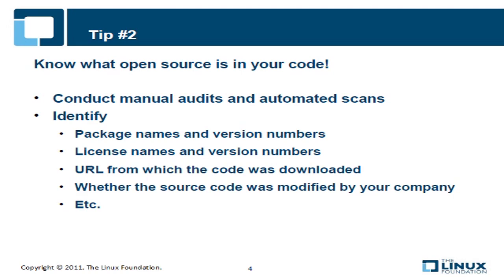Give the team leaders a spreadsheet template with the information they need to report, including open source package name and version number, license name and version number, the URL or other source from which the code was downloaded, and an indication of whether the source code was modified by your company. Later on, you'll do well to run the source code base through an automated scanner to identify other open source your teams will likely have missed in their manual audit.